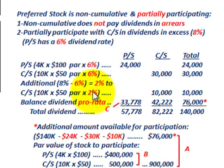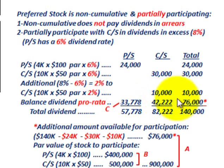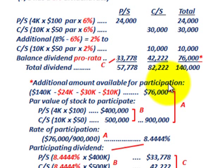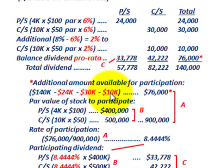That $10,000 is what the common stock gets allocated between the 6% and 8% rates. We could have just taken 8% times the common stock's 10,000 shares and $50 par to get $40,000 directly. The total we need to pay out is $140,000. We already allocated $24,000 to preferred and $30,000 plus $10,000 to common, so the remaining difference is $76,000.